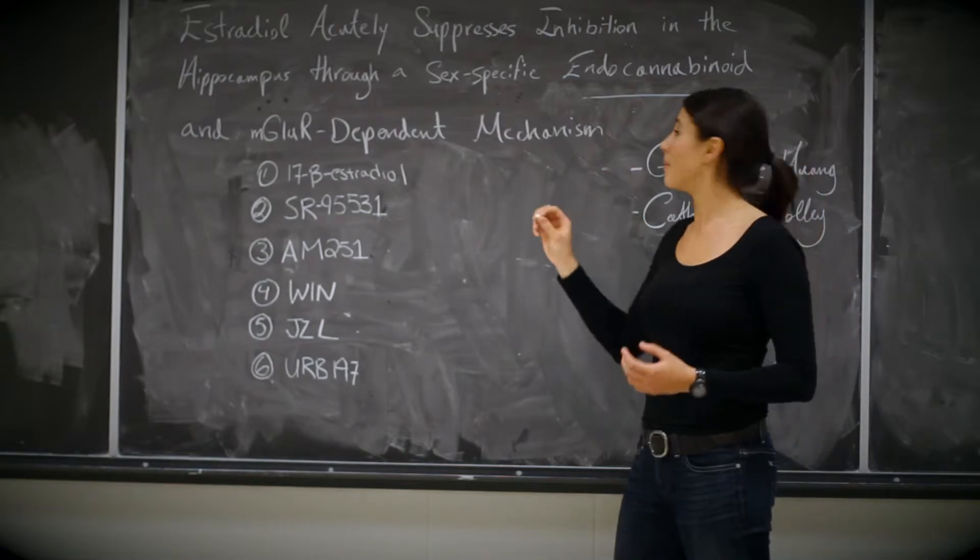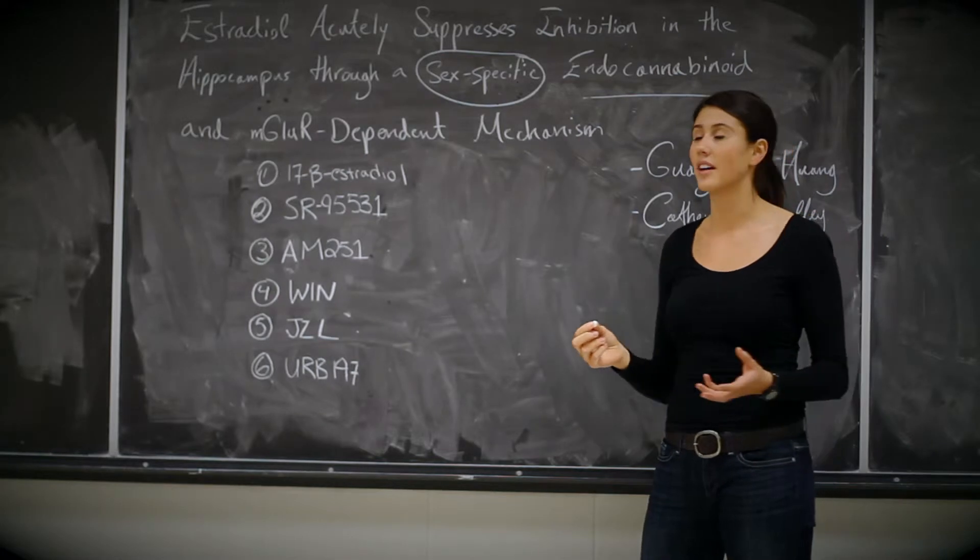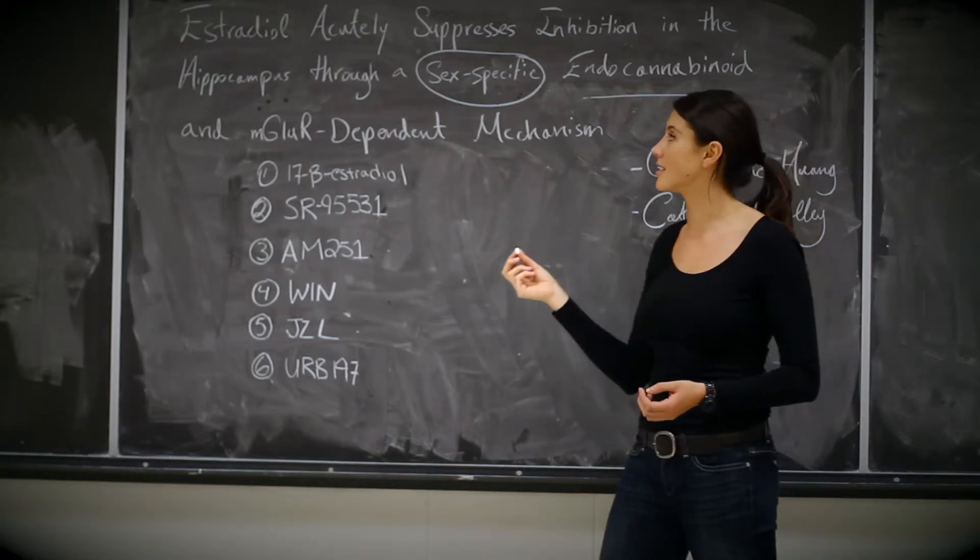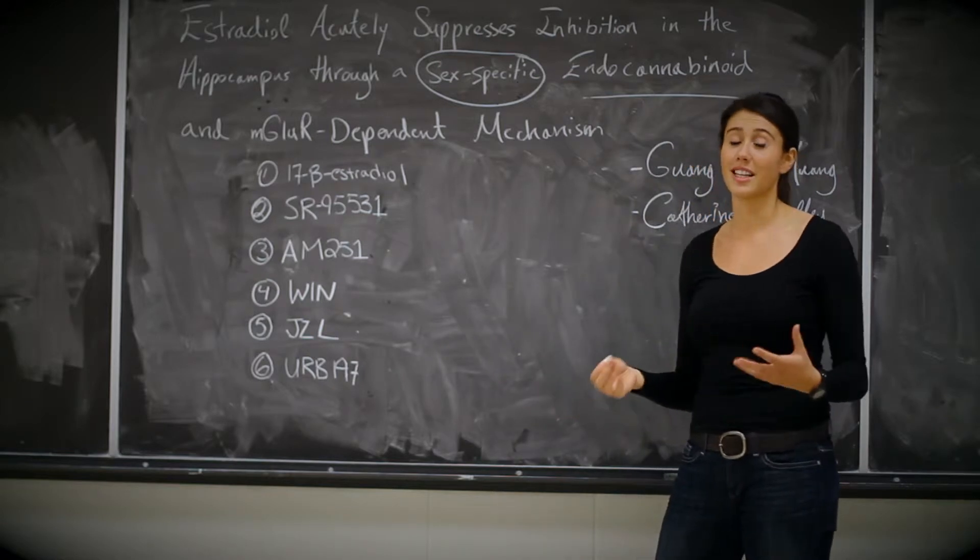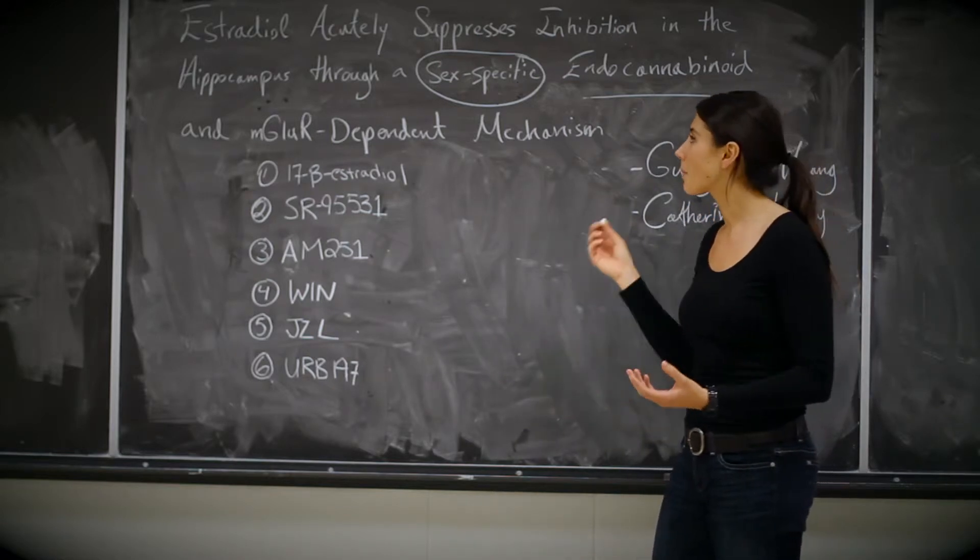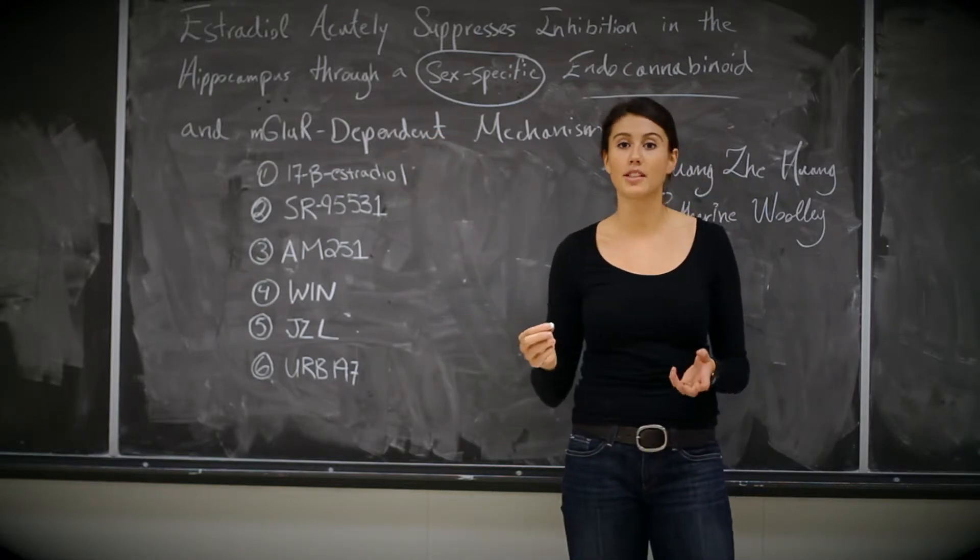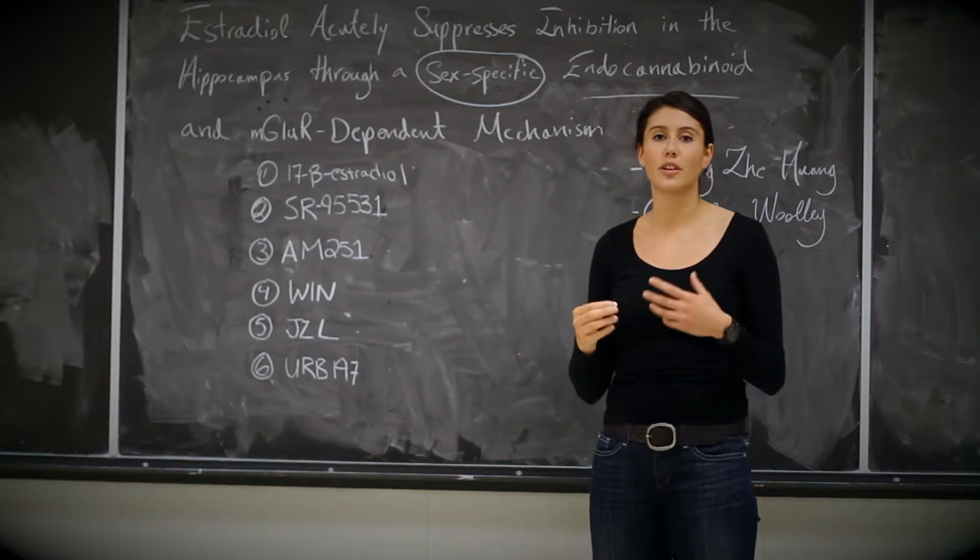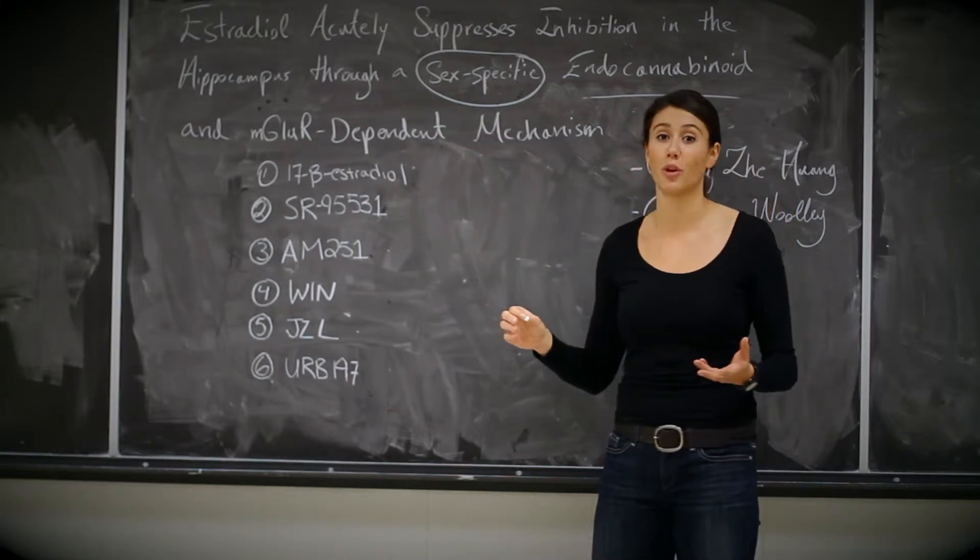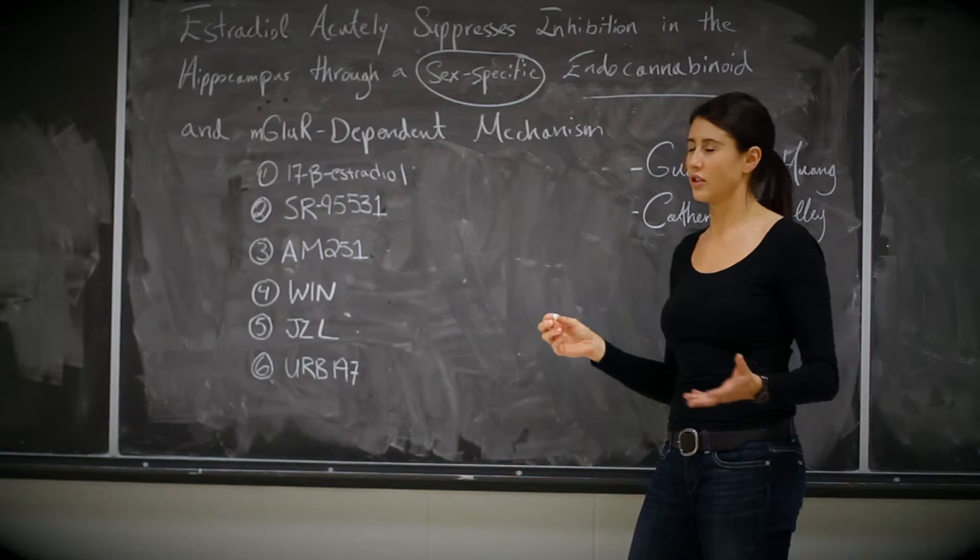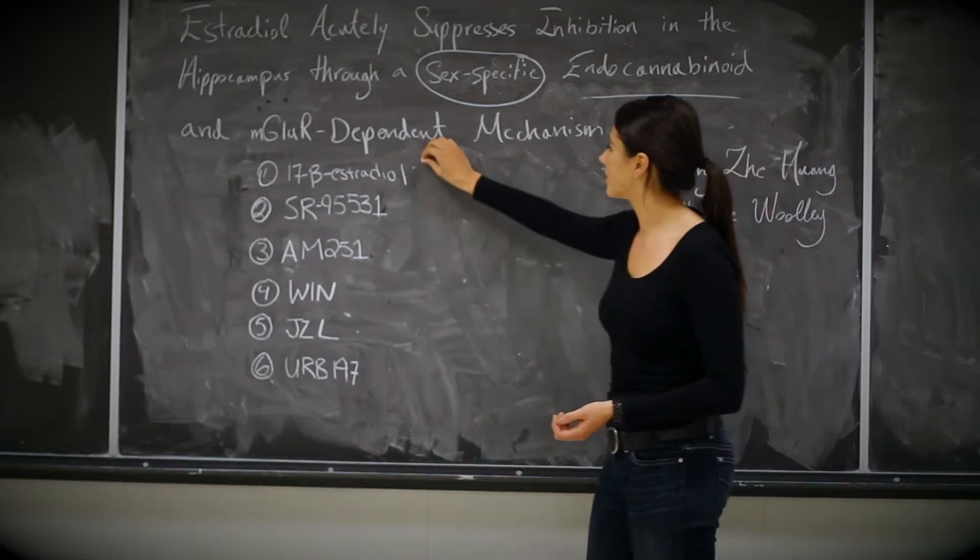So right off the bat, what kind of stuck out for me was the fact that it was sex-specific. So estrogen is synthesized in both males and females. Obviously there's a lot more in females as it's needed for reproductive organs. But in this article they realized that estrogen is actually synthesized in the hippocampus as a neurosteroid and this is used for modulation of its activity. The type of estrogen that we're going to be looking at is usually estradiol, and here it's E17-beta estradiol. For simplicity reasons, I'm going to be abbreviating this as E2.